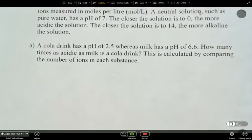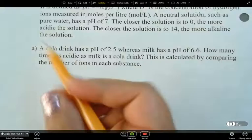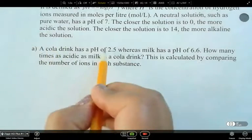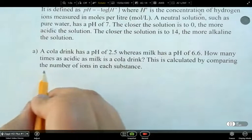So a cola drink has a pH of 2.5, whereas milk has a pH of 6.6. How many times as acidic as milk is the cola drink? So here we're going to compare the two similar to what we just did. And this is calculated by comparing the number of ions in each substance. So let's set up our two equations that we know.